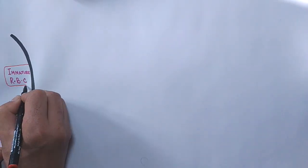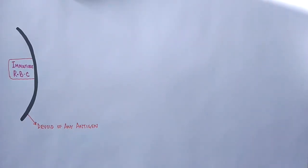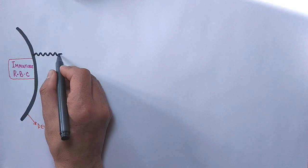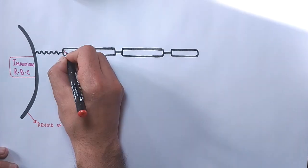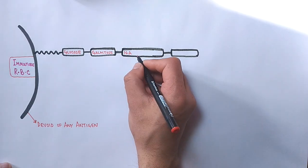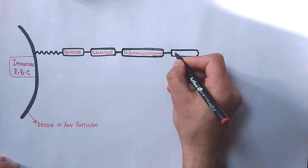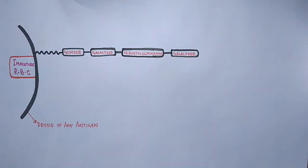Now looking at the structure of immature RBC that is devoid of any antigen yet. It has got oligosaccharide molecule on its surface having a structure that consists of glucose, galactose, N-acetylglucosamine, and galactose. This is the basic structure of erythrocyte prior to any addition of fully functional surface antigens.